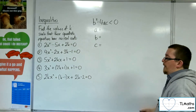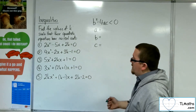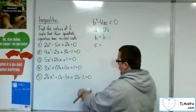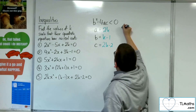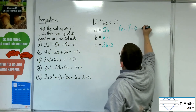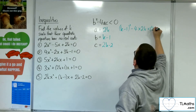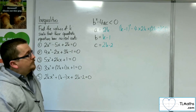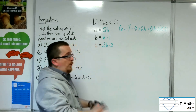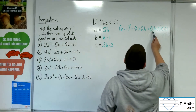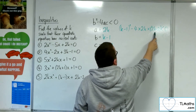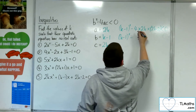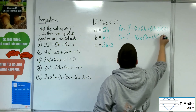Last but not least, number 5: 2kx squared plus (k minus 1)x plus (2k minus 2) equals 0. So A is 2k, B is k minus 1, and C is 2k minus 2. We want B squared take away 4 lots of A times C, and that's got to be less than 0. I've spotted I can pull 2 out of the C bracket, leaving 8k, then bringing the 2 out gives 16k, and then we'd have (k minus 1) less than 0.